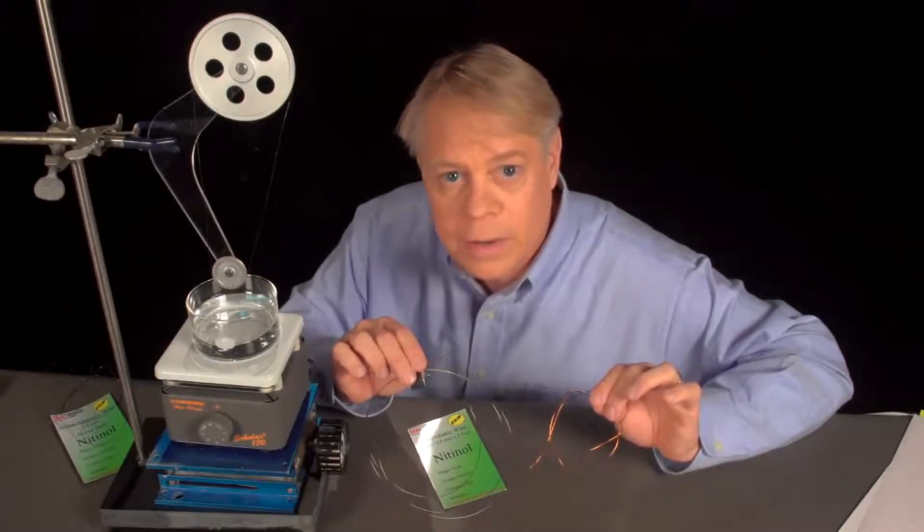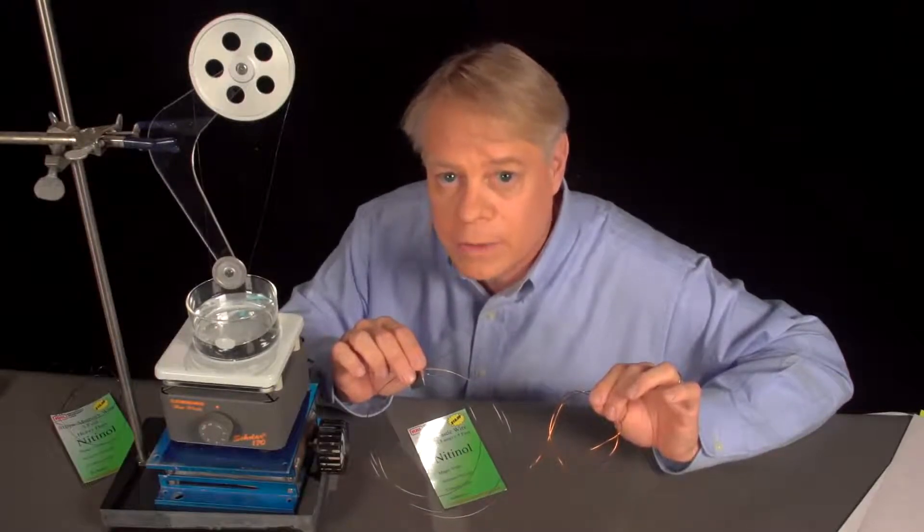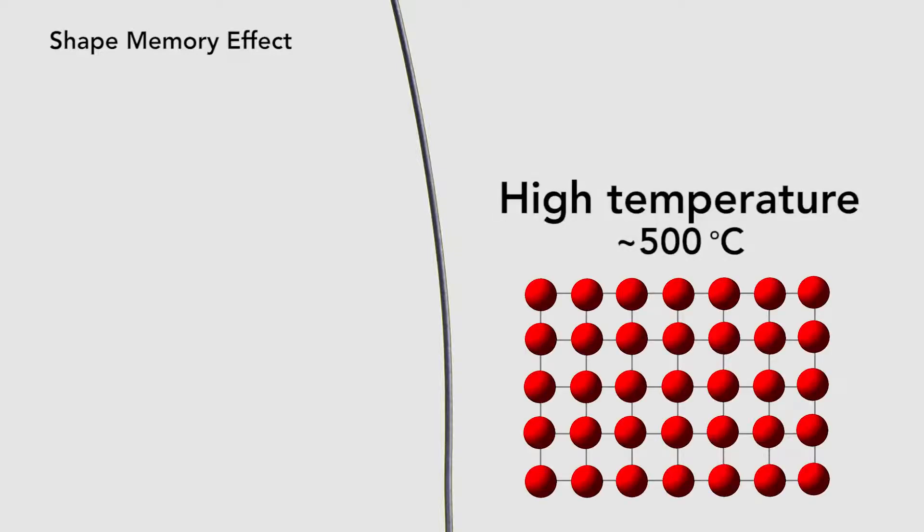Let's compare the two phenomena and look at what's happening at the atomic level. I start with shape memory. Here's a piece of nitinol wire that's been conditioned at 500 degrees Celsius or so to be straight. At that very high temperature, the crystal structure in the grains is those tidy, neat squares.